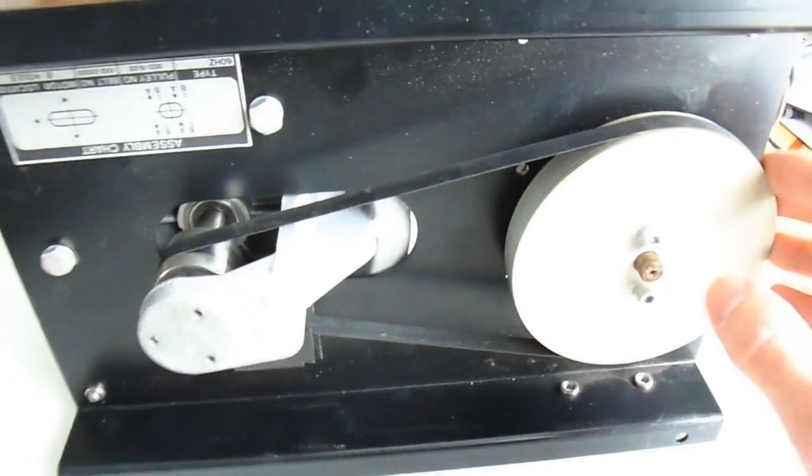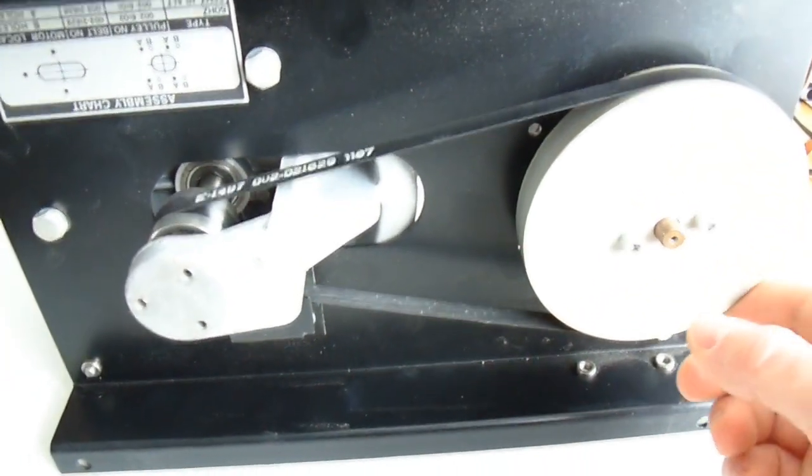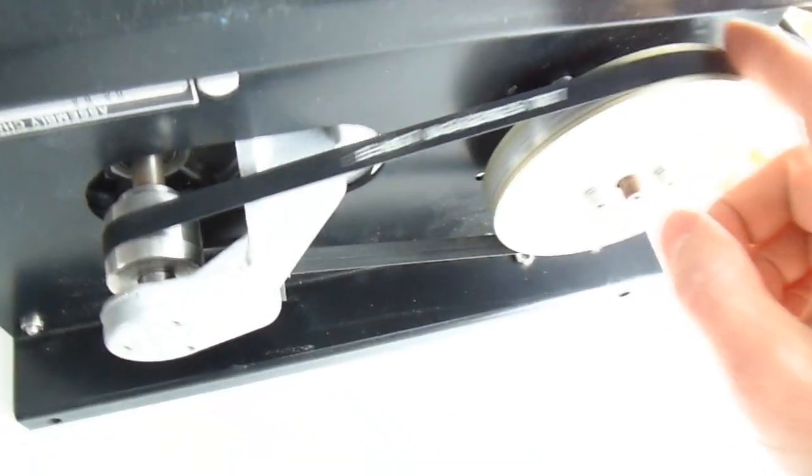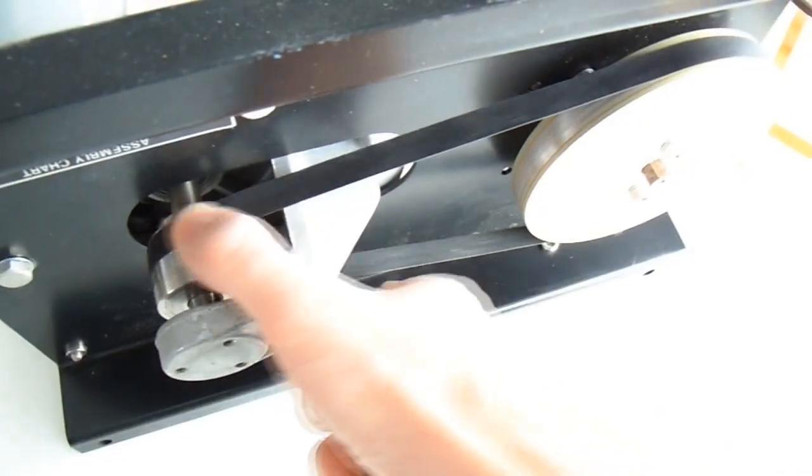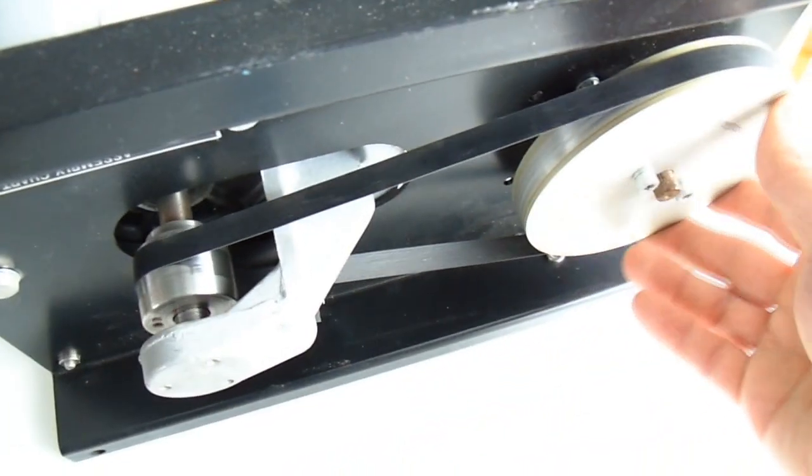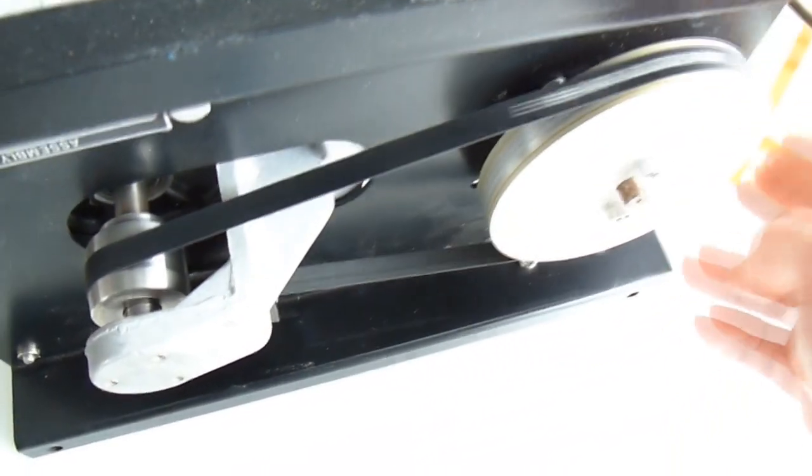Flat belts like this are a little bit of a mystery of physics. They magically manage to stay tracking without any sort of flanges on the pulleys. And even if I push this belt to the side a little bit like that, now if I turn it, it just magically comes back on center.